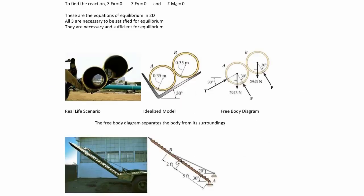In equilibrium, we have to satisfy forces and moments. The concept of equilibrium suggests that the forces are equal to zero. In two dimensions, we have three conditions: the sum of the forces in X must equal zero, the sum of the forces in Y must equal zero, and the sum of the moments must equal zero. These are the three necessary and sufficient conditions for equilibrium in two dimensions.